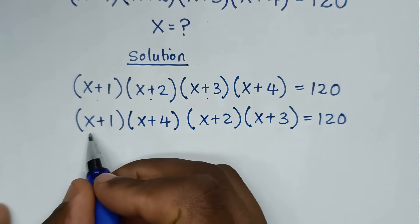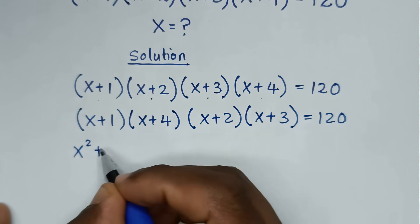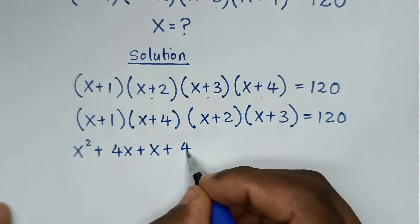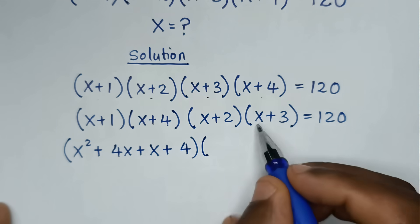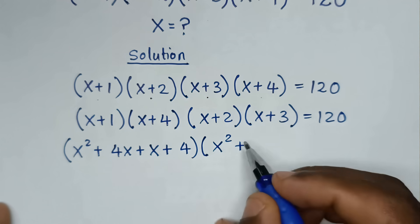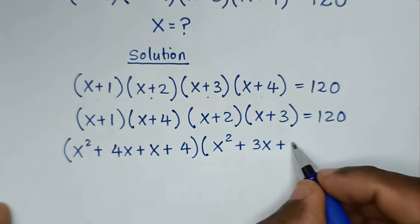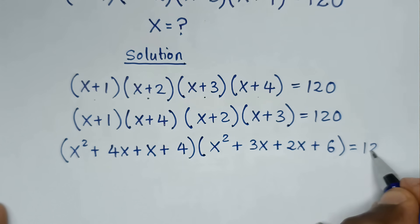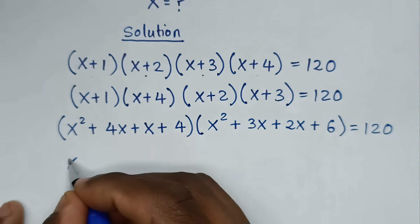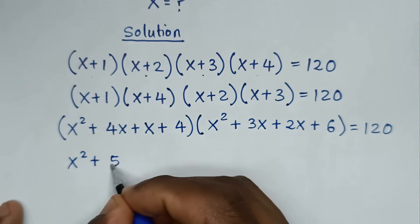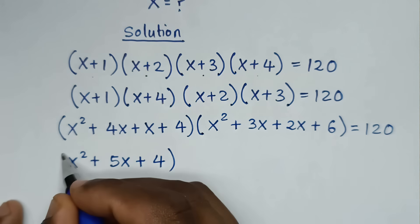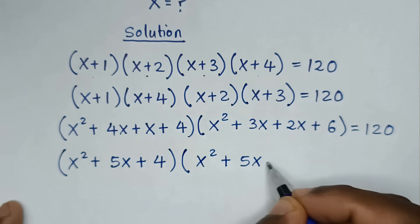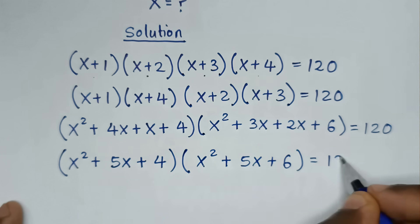To multiply: (x+1)(x+4) gives x² + 4x + x + 4, and (x+2)(x+3) gives x² + 3x + 2x + 6. Simplifying, we get (x² + 5x + 4)(x² + 5x + 6) = 120.